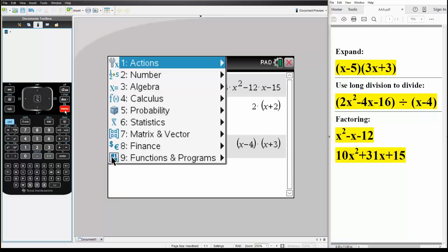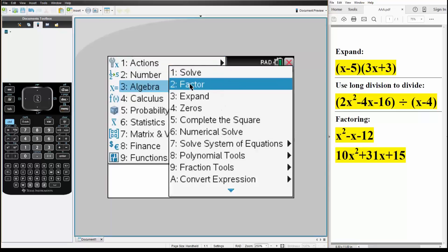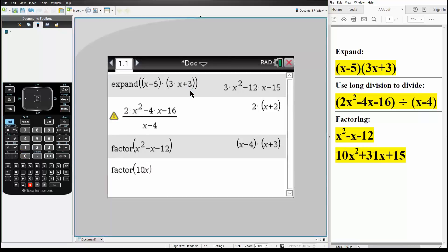Next, we do the exact same thing for the other problem. So algebra, factor, 10x squared plus 31x plus 15, like this, enter.